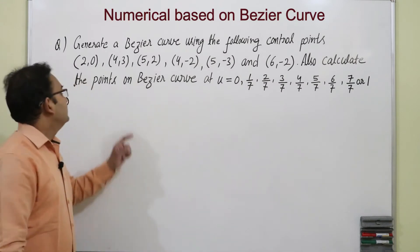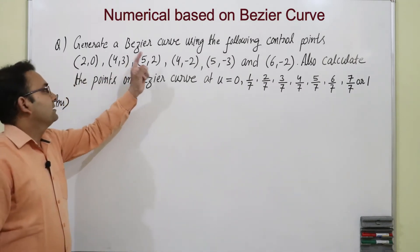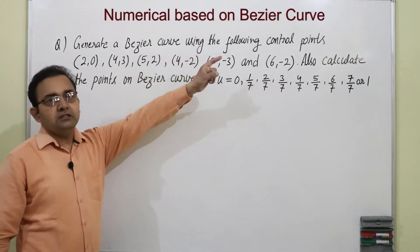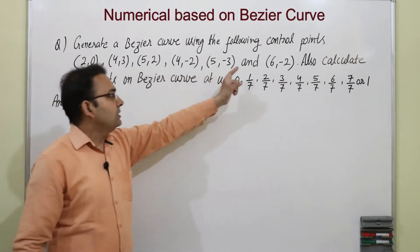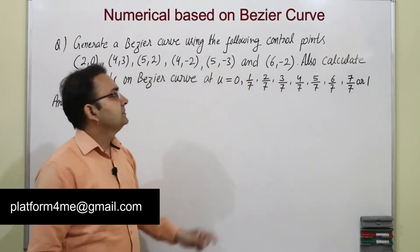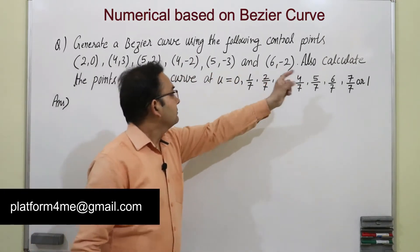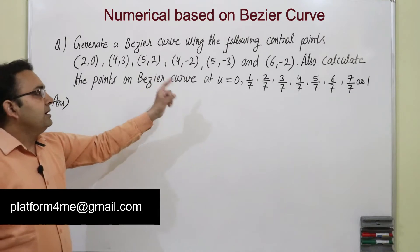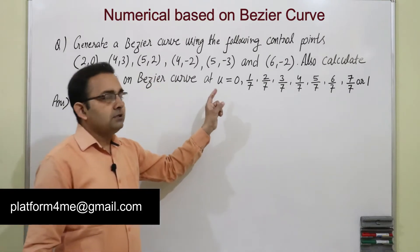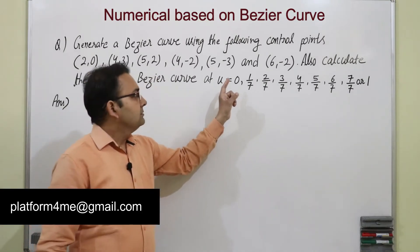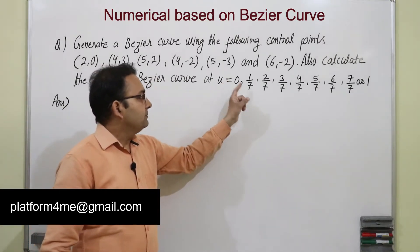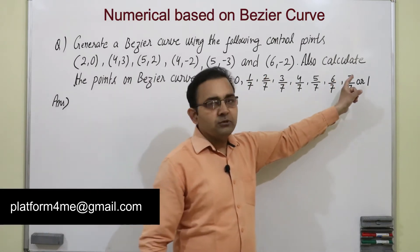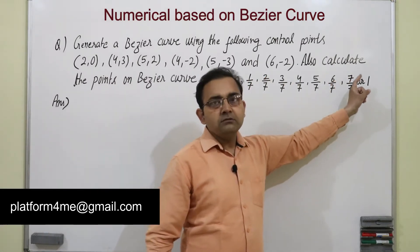The question is: generate a Bezier curve using the following control points. Also calculate the points on the Bezier curve at u equal to 0, 1/7, 2/7, up to 7/7 or 1.